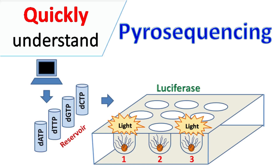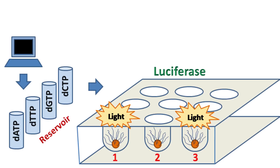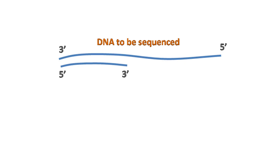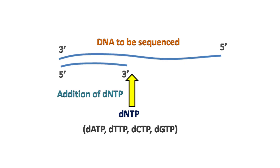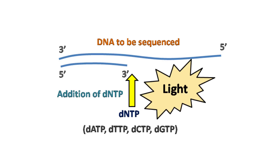Here everyone, Quickback Chemistry Basics here. Let's talk about Pyrosequencing. Pyrosequencing is a sequencing technique in which incorporation of dNTPs in the DNA is detected in the form of light. Let's see the concept of Pyrosequencing.